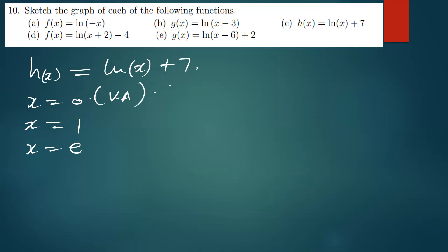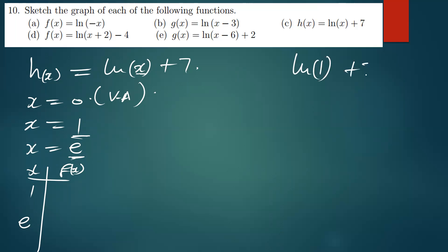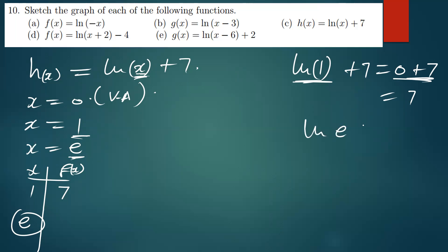The x-values in the table: equate x to one and x to e. When x is one: h(1) = ln(1) + 7 = 0 + 7 = 7. When x is e: h(e) = ln(e) + 7 = 1 + 7 = 8. So our points are (1, 7) and (e, 8).